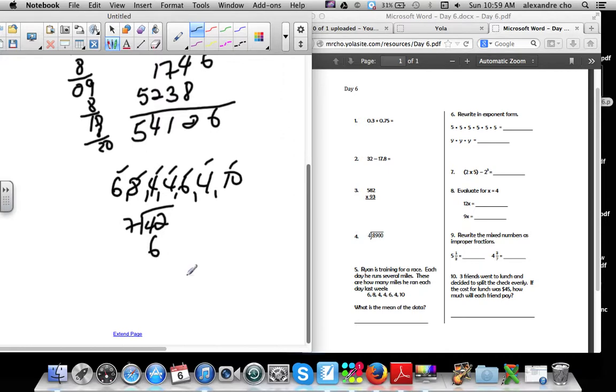Write in exponential form: the first one is 5 times itself 6 times, is 5 to the 6th. And y times itself 3 times is y to the third. Number 7: 2 times 5 and then minus 2 to the third power. You do parentheses first and it's 10 minus 2 to the third is 8. Final answer is 2.